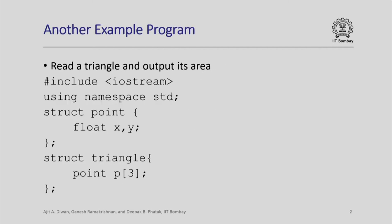Let us go back and see the declarations. We have declared a structure called point which stores two floating point values. This will be used to represent a point in the plane, and a triangle is a set of three points in the plane. So we are declaring a type called triangle which stores an array with three points. We build more complicated data types using the built-in types and using constructs in C++ that allow you to define other types.